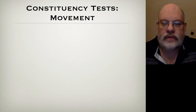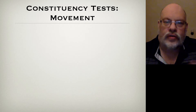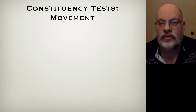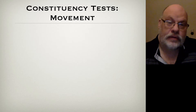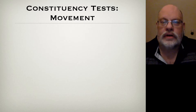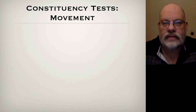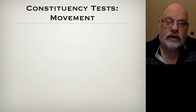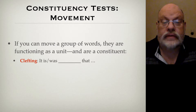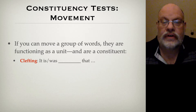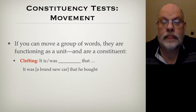Another test draws upon the idea that we're looking at internal units of syntactic structure. If you find items that behave as units with respect to some kind of syntactic process, then we know they're constituents. One kind of syntactic process we have is movement — you can move things around in a sentence under certain circumstances. If you can move a group of words, that's a constituent. For example, using the frame it was blank that: it was a brand new car that he bought — a brand new car is a constituent because it can appear in that slot.